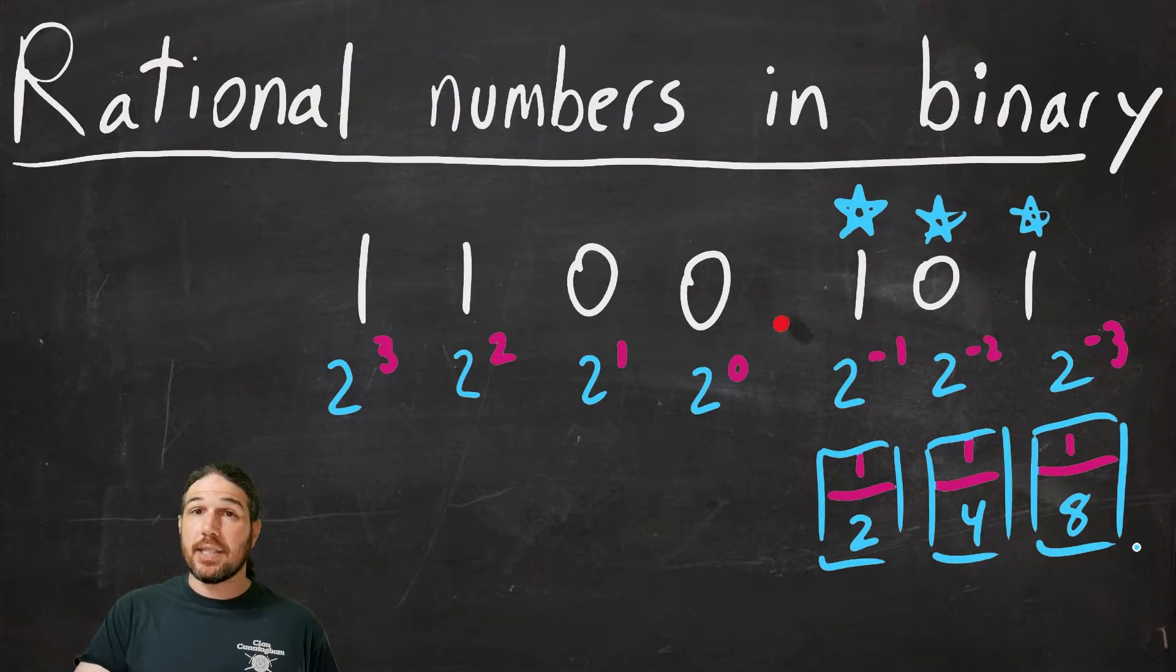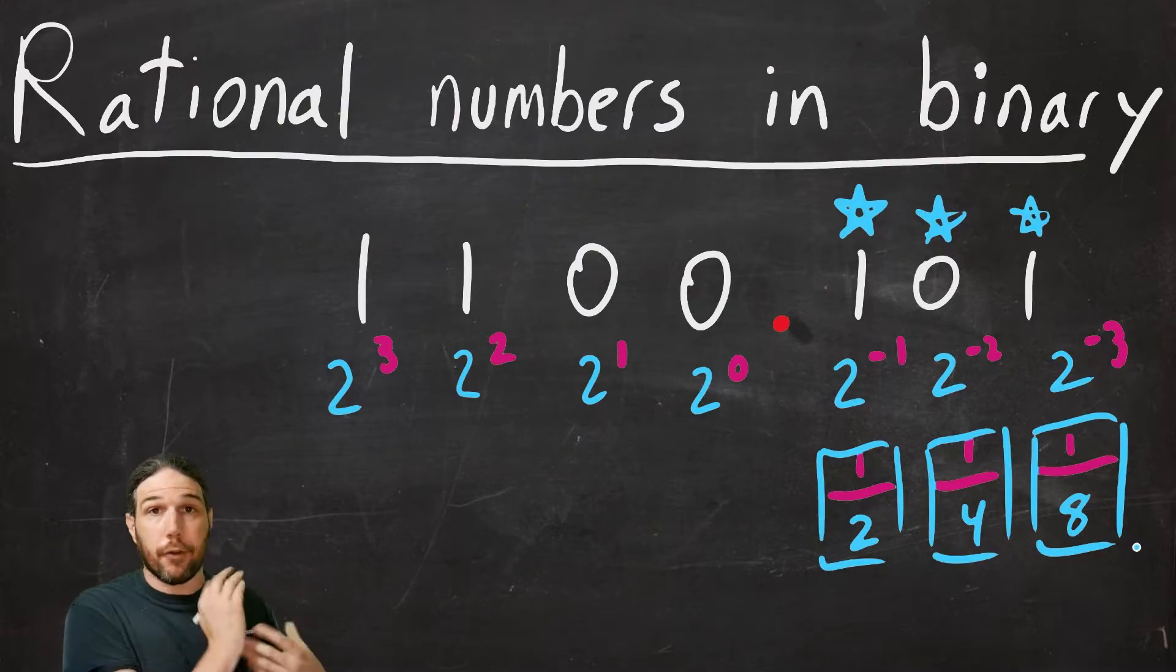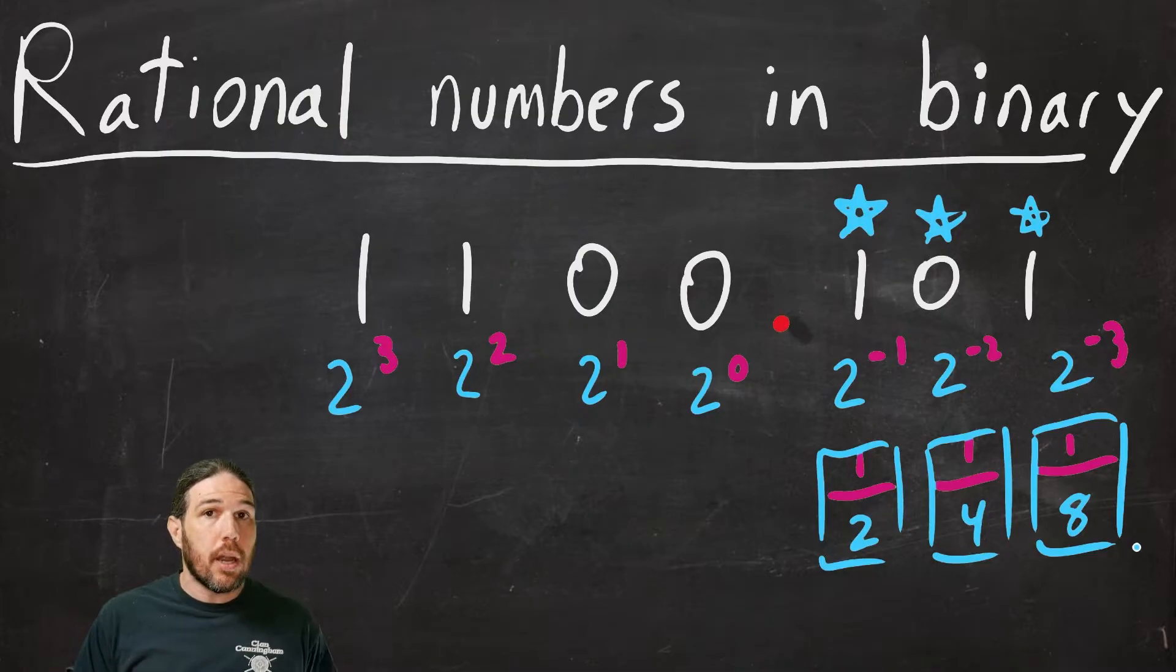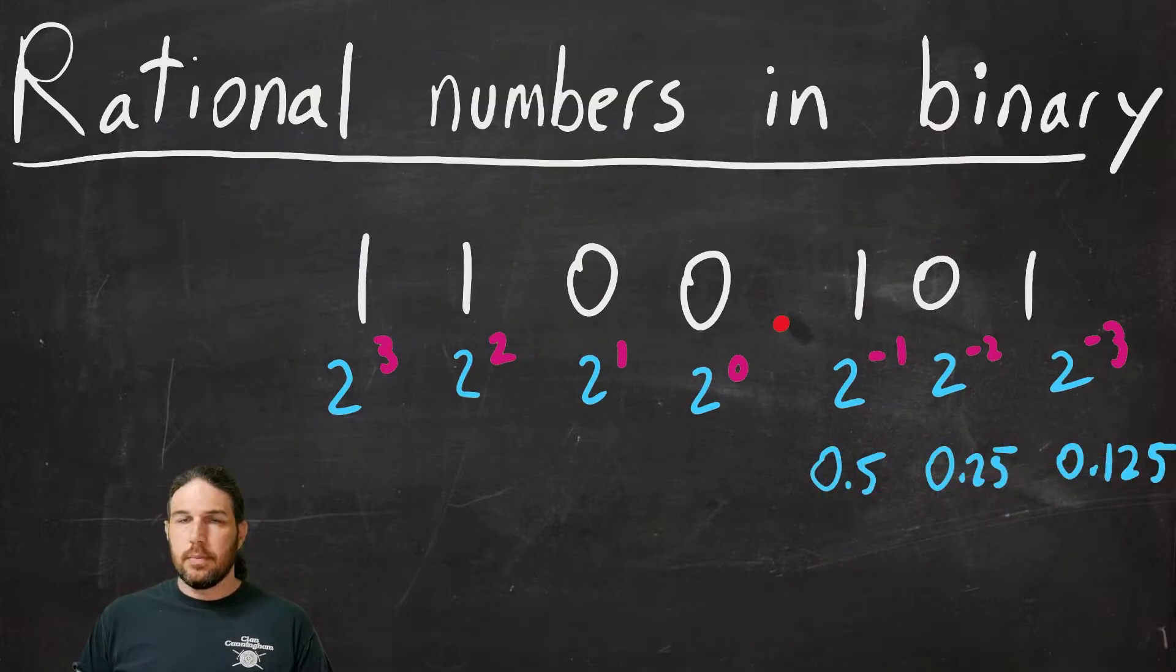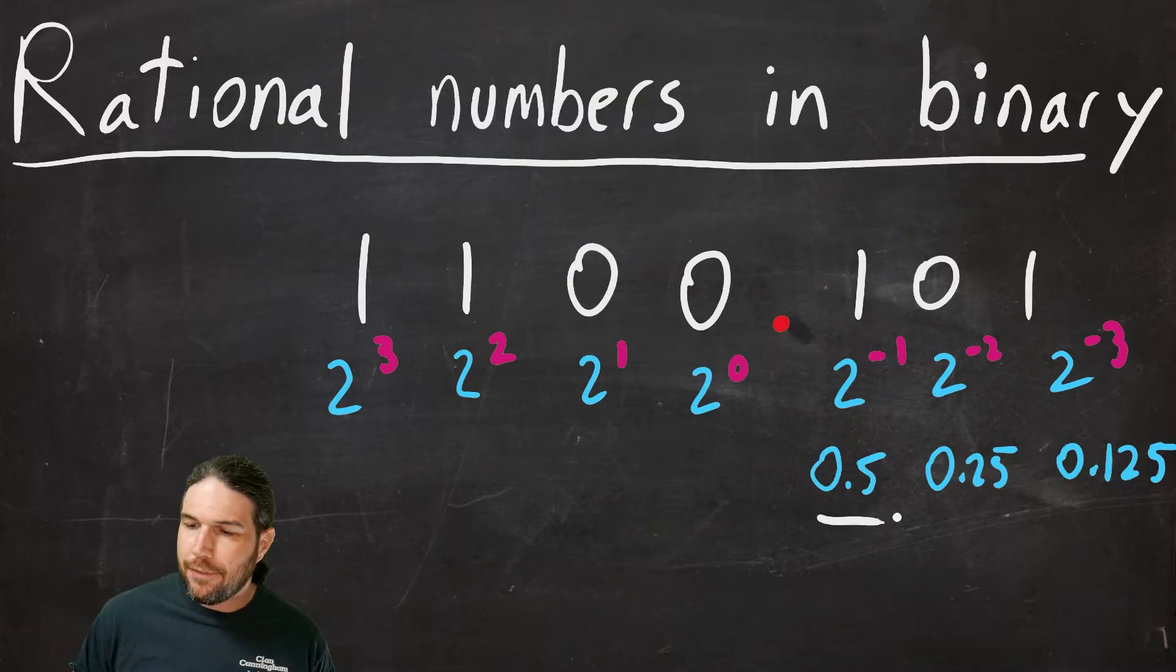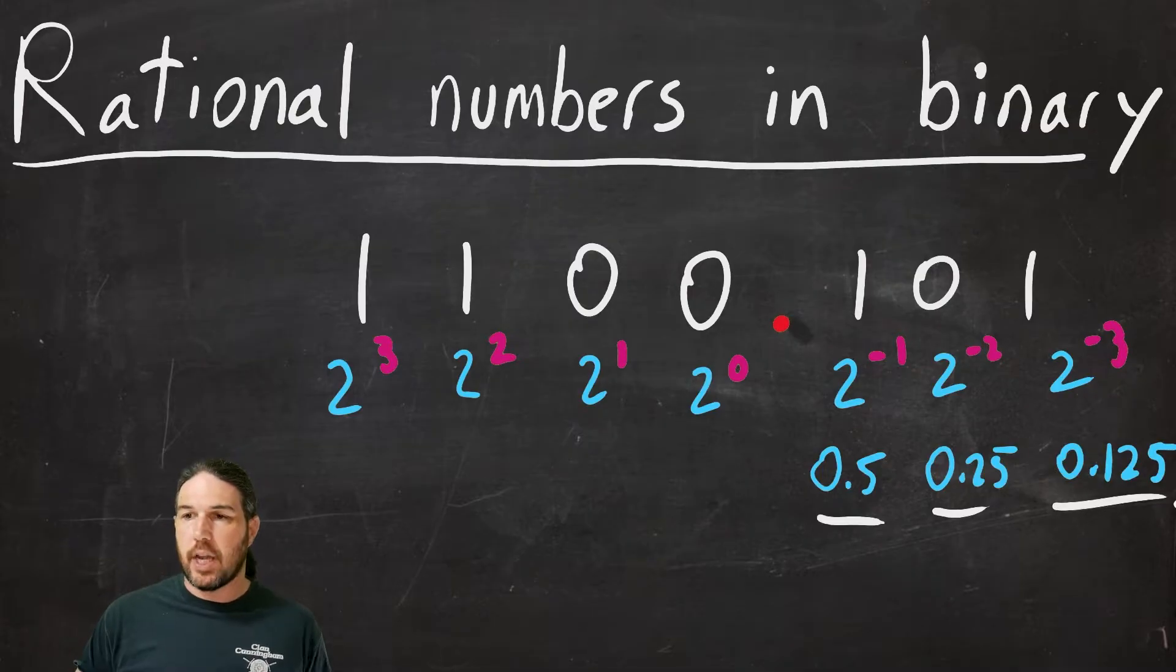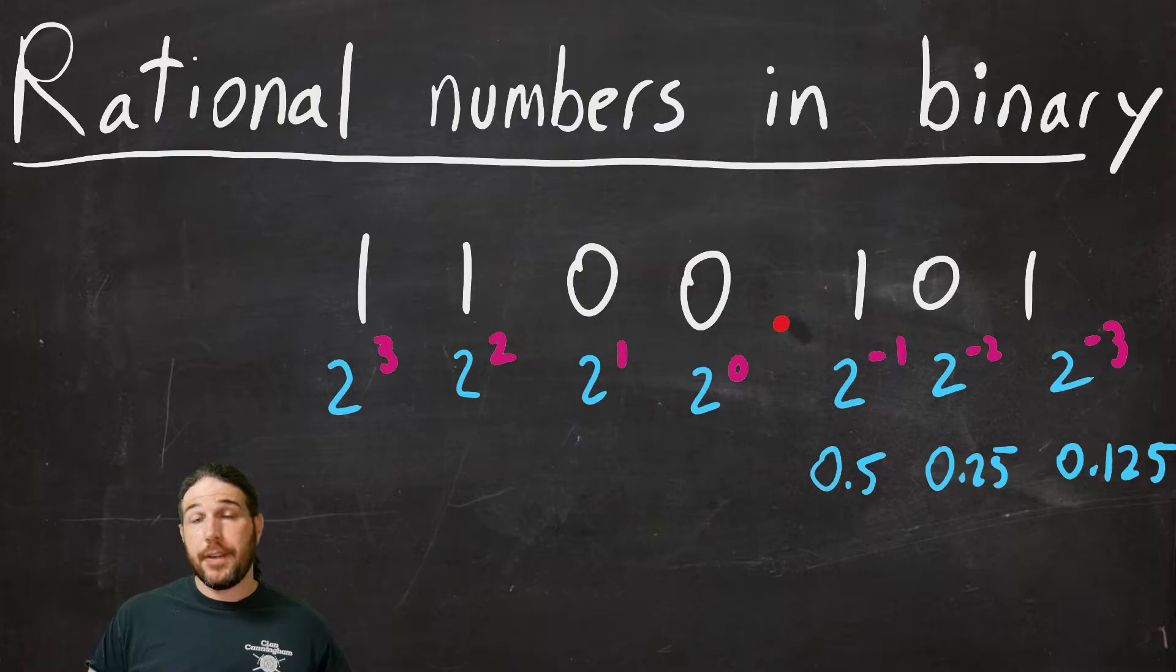But again, just like with decimal, we can't just keep going forever. If there is an irrational number that we want to write down, we are going to have to at some point round it off. In order to do this, the first thing I did was I translated from fractions into decimals. Instead of one half, I put 0.5. Instead of one fourth, I put 0.25. One eighth is 0.125, etc. So in order to figure out what number this is, I just have to figure out what place values I have and add them all up as usual.